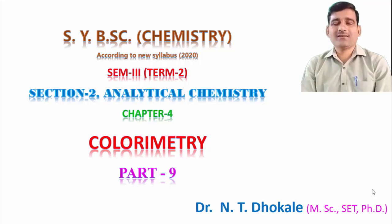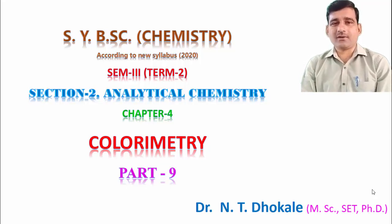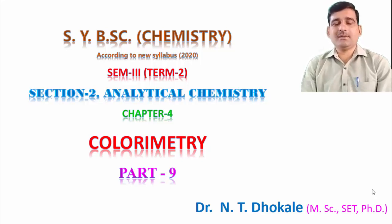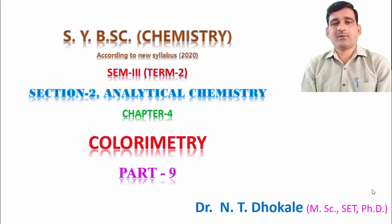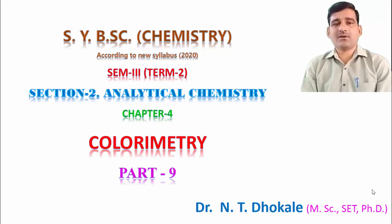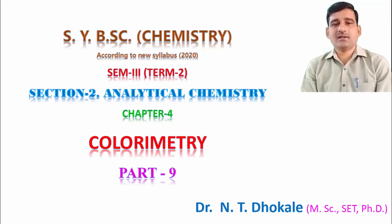Hello everyone, welcome to the online lectures. In the previous lecture, we discussed the basic components of a colorimeter — the block diagram of the instrumentation — containing a radiation source, a monochromator or filters, a sample holder, a detector, and the last one is the readout.